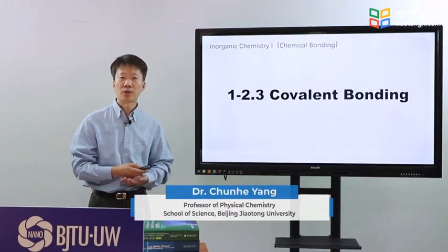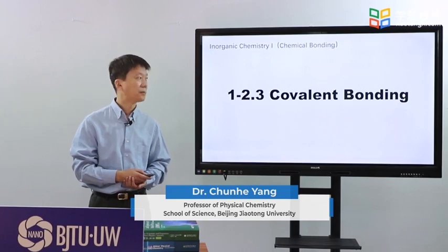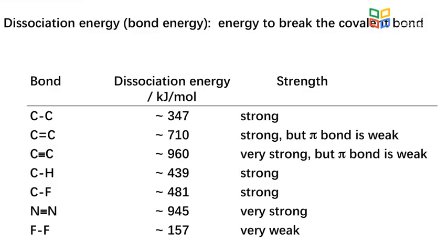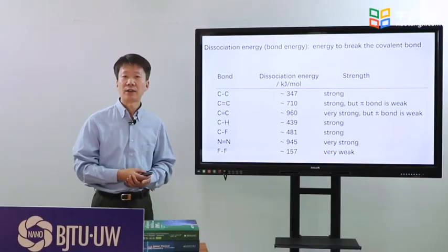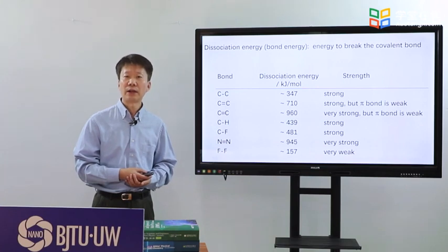Covalent bonding comes from the sharing of electron pairs between atoms. The strength of covalent bonding is usually described by dissociation energy, the energy to break the covalent bond. You may have an impression on how strong covalent bonding is.